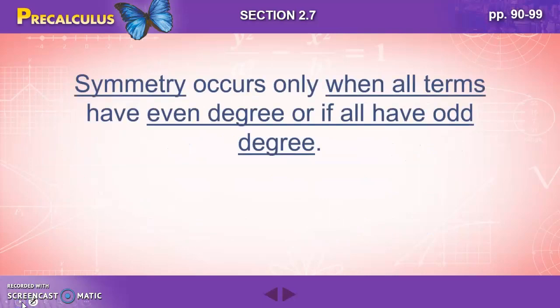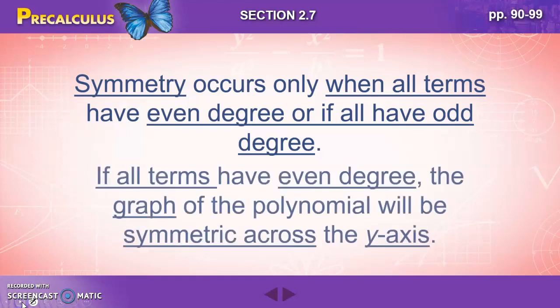Symmetry occurs only when all terms have even degrees or if all have odd degrees. If all terms have an even degree, then the graph of the polynomial will be symmetric across the y-axis. So let's say you have an x squared, an x fourth, and an x to the sixth term.